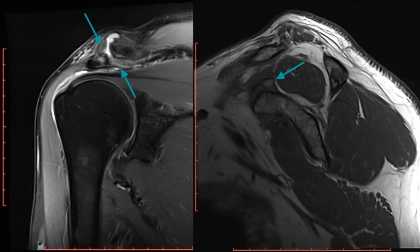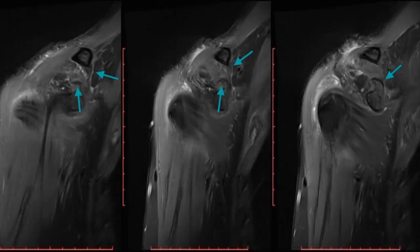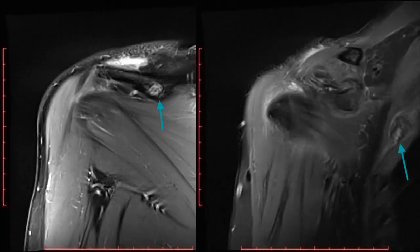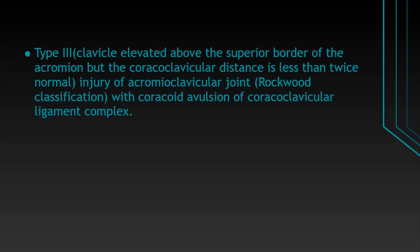The sagittal T1 image shows bone fragments at the anterior superior aspects of the coracoid process, and the normal coracoclavicular ligament complex is not visualized. Coronal PD fat sat images show a complete tear of the clavicular attachment of the trapezoid ligament; the remaining visualized ligament appears lax. Interstitial tears of the conoid ligament are seen. These findings are consistent with coracoid avulsion of the coracoclavicular ligament complex. Interstitial tears of the trapezius and deltoid muscles are also seen. An incidental well-defined lesion is seen in the spine of the scapula with punctate hypointensities, likely representing a chondroid lesion, possibly an enchondroma. Fracture of the right third rib is also seen. To summarize, there is a type 3 injury of the acromioclavicular joint with coracoid avulsion of the coracoclavicular ligament complex.